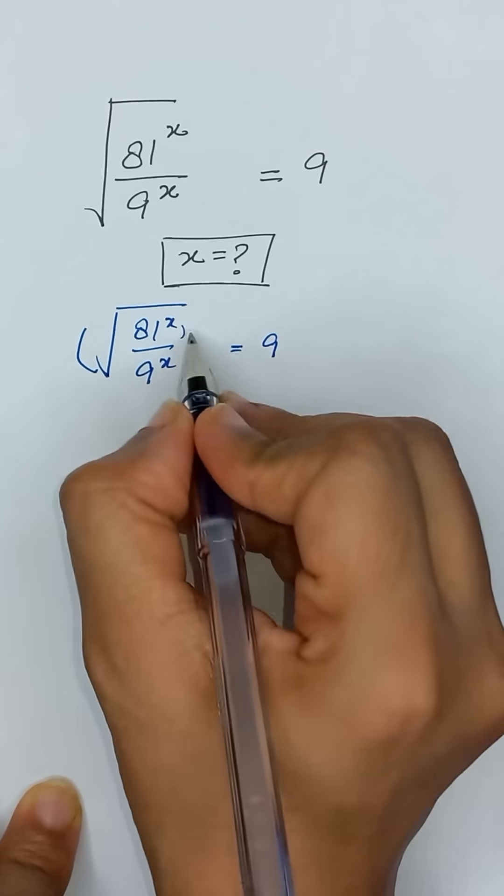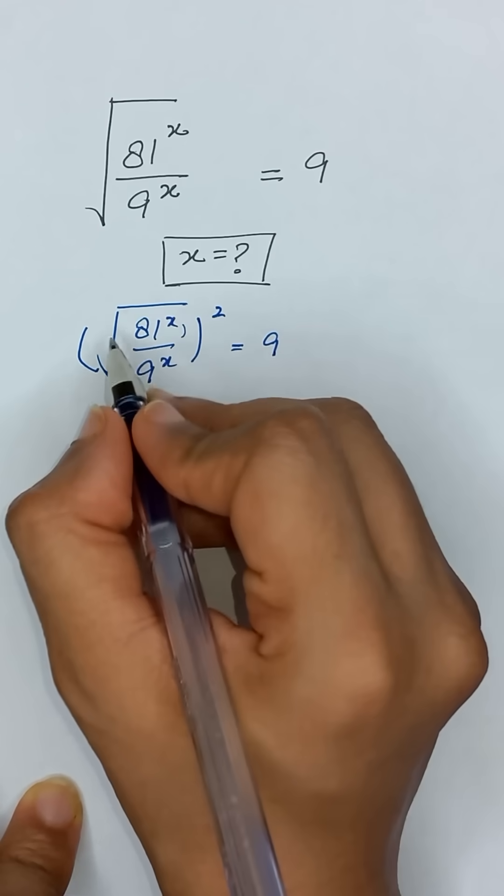Now we will remove this radical sign. So we will apply square on both sides to remove this square root.